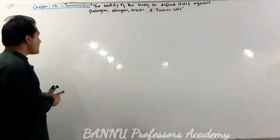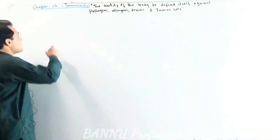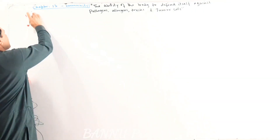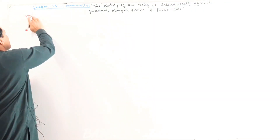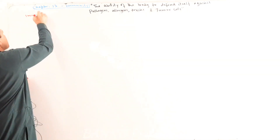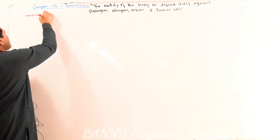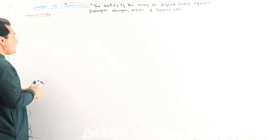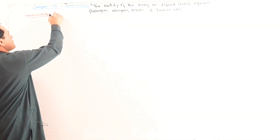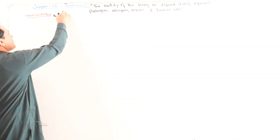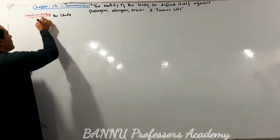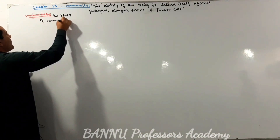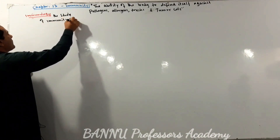The immune system is a branch of biological immunity, which is immunology — the study of immunity and the immune system.